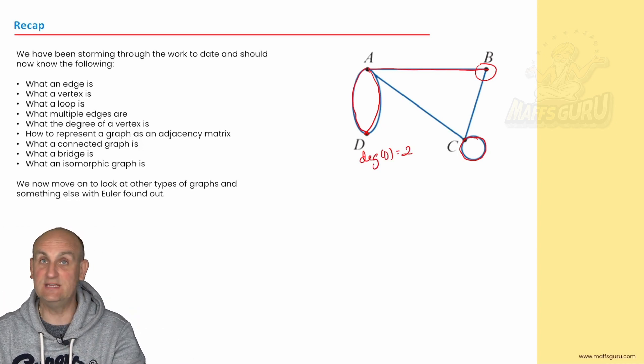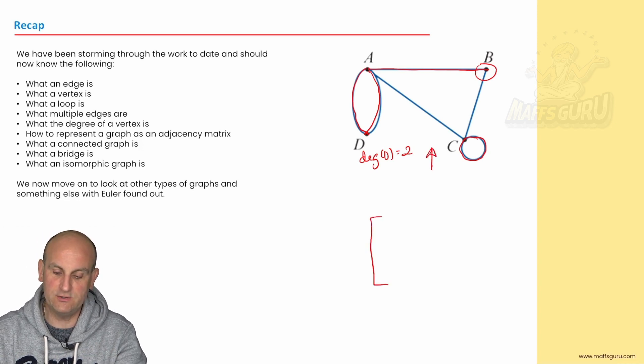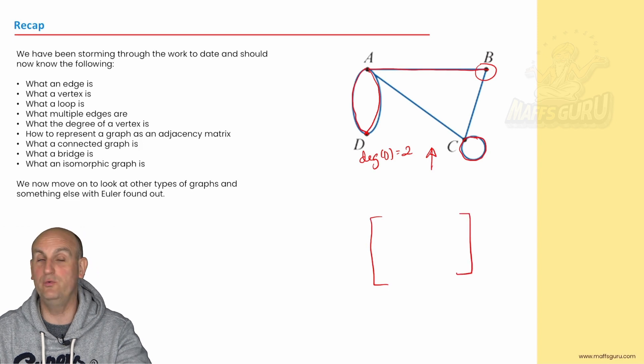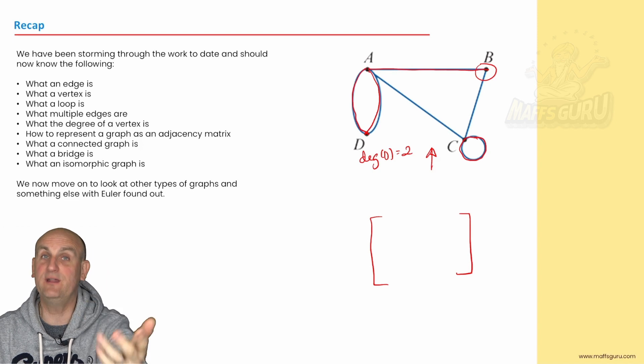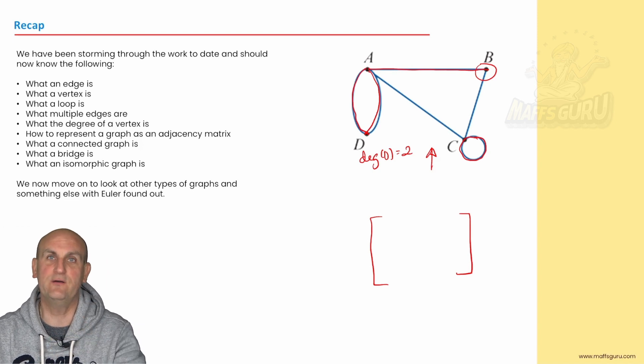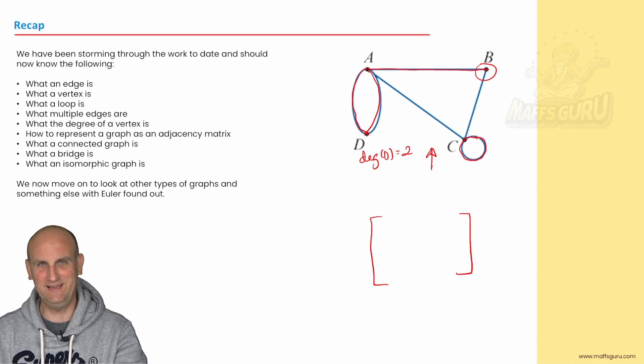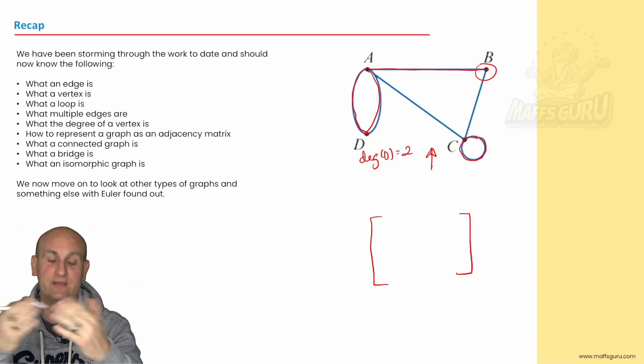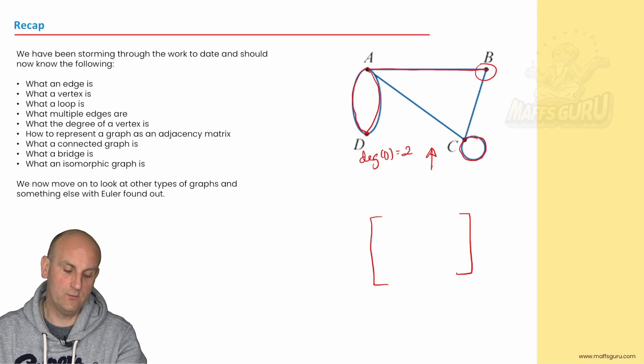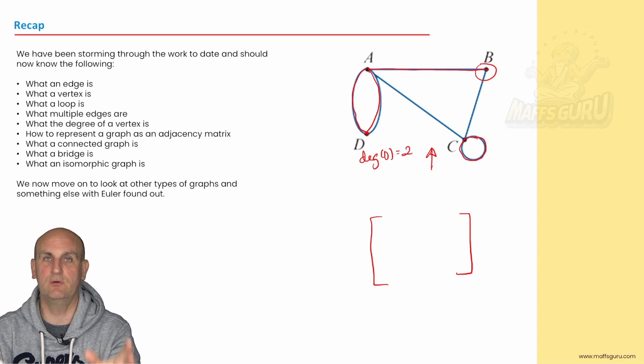We know what an adjacency matrix is, how to represent this in terms of an actual matrix with 1s, 0s, 2s or whatever numbers we have. We know that a connected graph doesn't have any loners in it, we can get to all other points. We know what a bridge is, we can take separate parts of a graph and connect them together. And we know what isomorphic graphs are because we can draw the same graph in different ways but maintaining the connections.